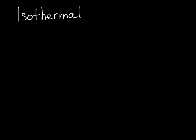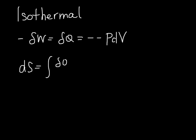And the last case is for isothermal. And for isothermal, we found that negative delta W is equal to delta Q, because dU equals zero, and this is equal to negative, negative P dV. So we have our equation for dS, which is still Q over T, and we're going to plug this in here.